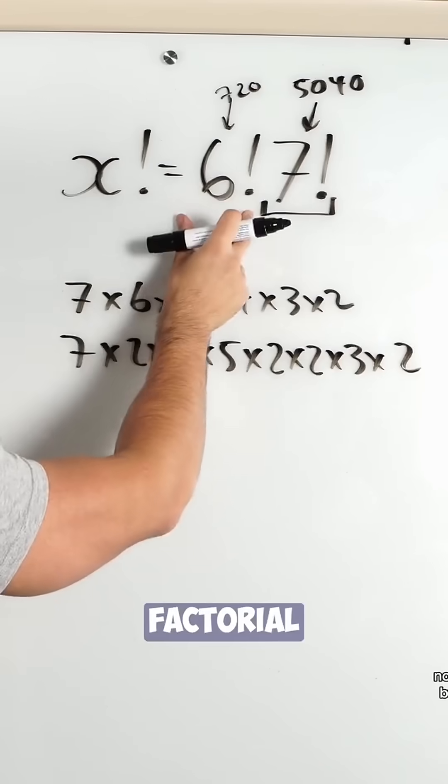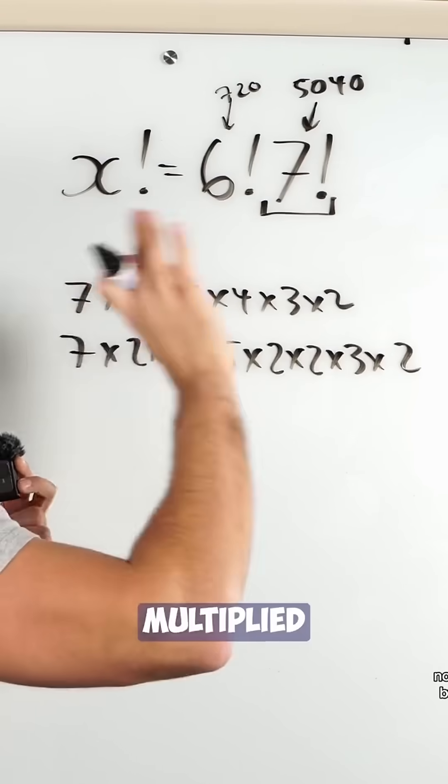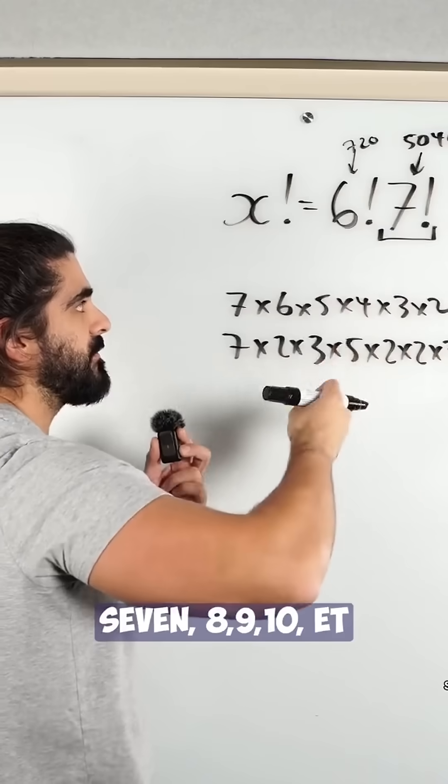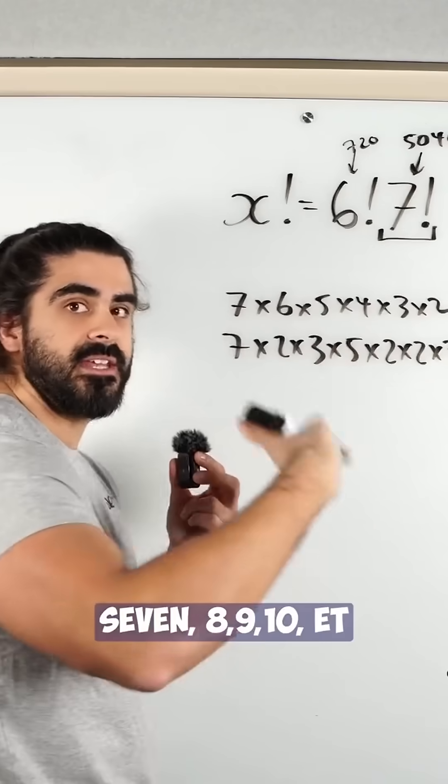Now, 6 factorial is 6 multiplied by all the integers down to 1. So I'm going to look for 7, 8, 9, 10, etc. to combine with the 6 factorial.